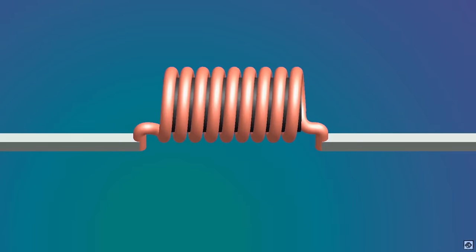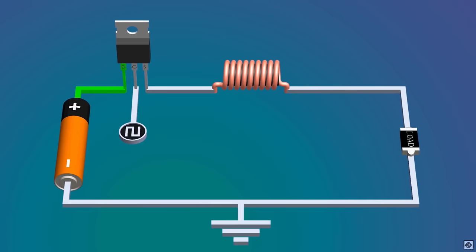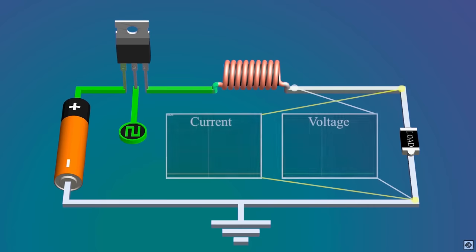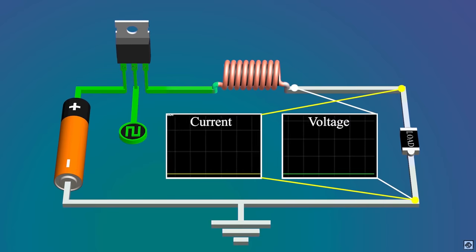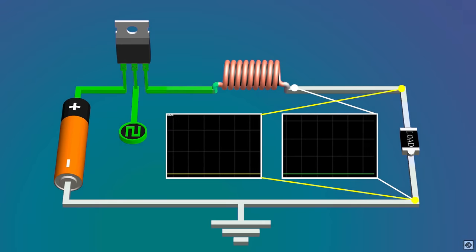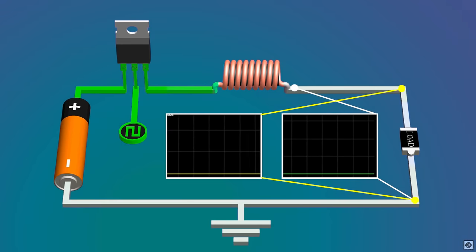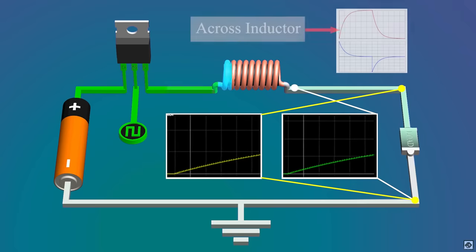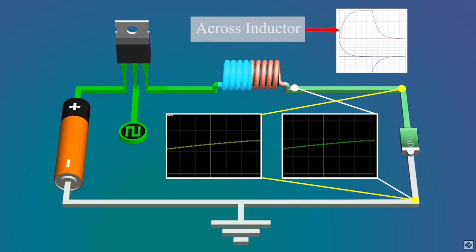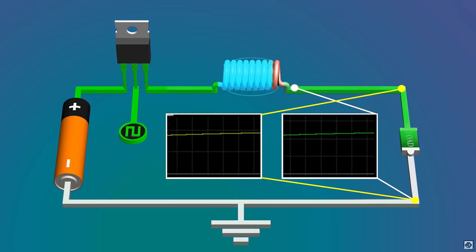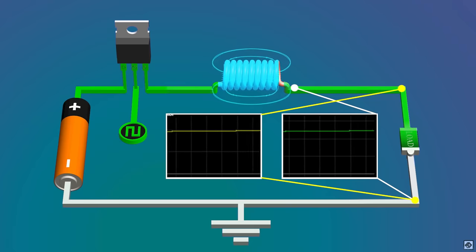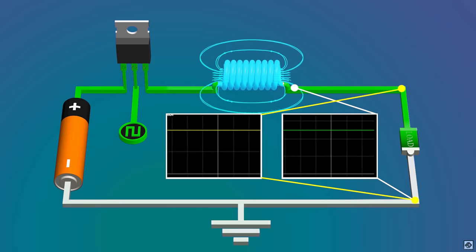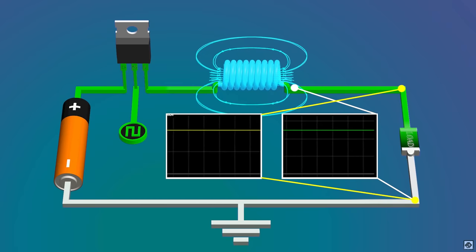To smooth the signal we add an inductor in series with the load. An inductor wants to keep the current constant through itself, and for that it will instantly change the voltage across itself. As the switch closes, the current starts to flow. To resist this flow, the inductor drops the voltage at the other end to zero, creating an equal and opposite voltage to the battery. This is possible due to the magnetic fields generated in the inductor, but it can't resist for long — thus the current starts flowing and the voltage at the other end starts rising. The inductor starts storing energy in its magnetic fields, and after some time the magnetic field stabilizes and the inductor acts as a closed switch allowing maximum current to flow.